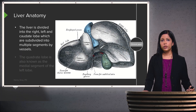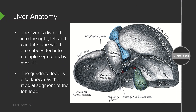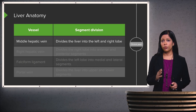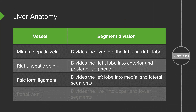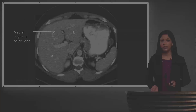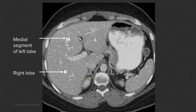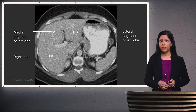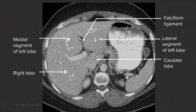The liver is divided into right, left, and caudate lobes, which are then subdivided into multiple segments by the vessels. The quadrate lobe is now known as the medial segment of the left lobe. The middle hepatic vein divides the liver into right and left lobes. The right hepatic vein divides the right lobe into its anterior and posterior segments. The falciform ligament divides the left lobe into its medial and lateral segments. The portal vein divides the liver into upper and lower segments. Down here we see the caudate lobe.